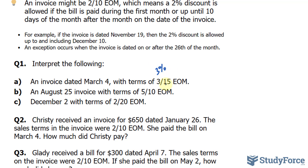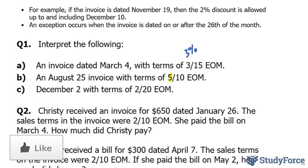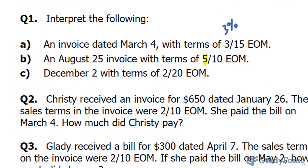So that first number is 3%, and that's 15 days after the next month. On August 25th, an invoice has the terms 5-10 EOM. This means that you can obtain a 5% discount if you pay by September 10th. December 2 with the terms 2-20 EOM means that you have up until January 20th to obtain a 2% discount — you don't have to pay until the year after, because the month after December is the next year.